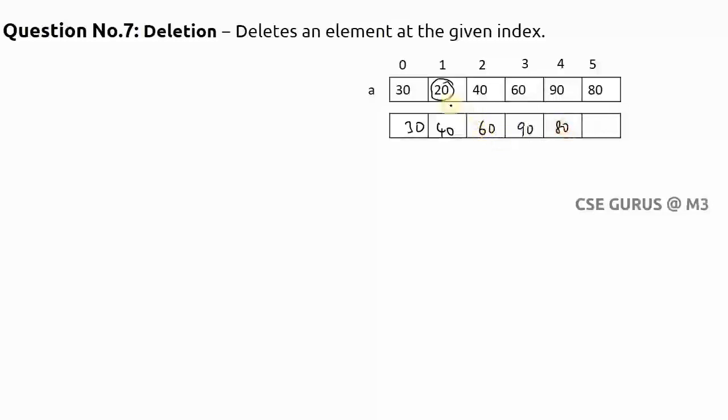Now what is the logic to be followed here? So in order to delete an element at a particular index, particular position, what I need to do? It is very simple. Whatever the next element is there, simply moving front.